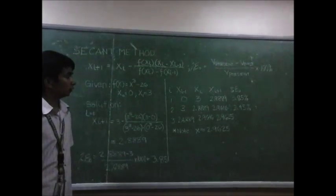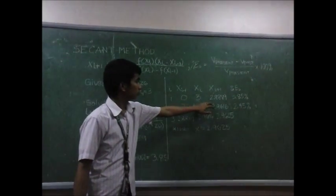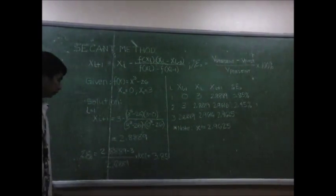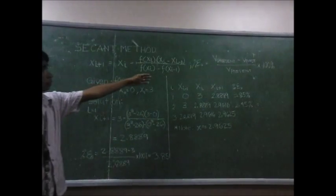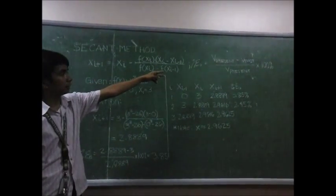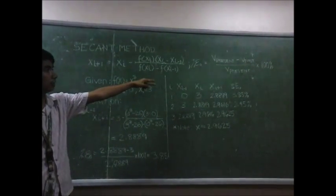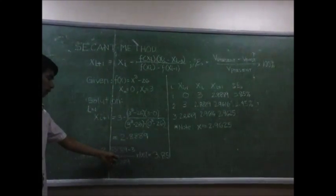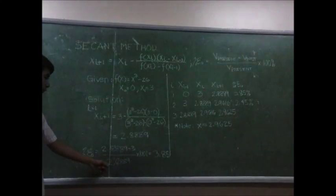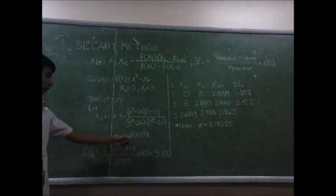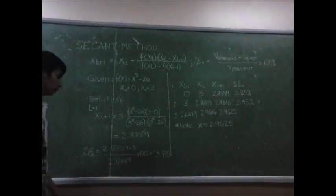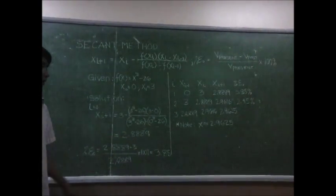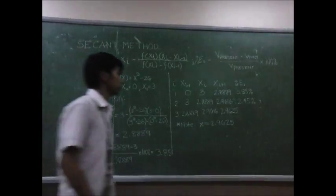Placing that in our table and solving for the approximated error, the formula to use is (v_present - v_past) / v_present times 100%. So (2.8889 - 3) / 2.8889 times 100% gives us 3.85%.